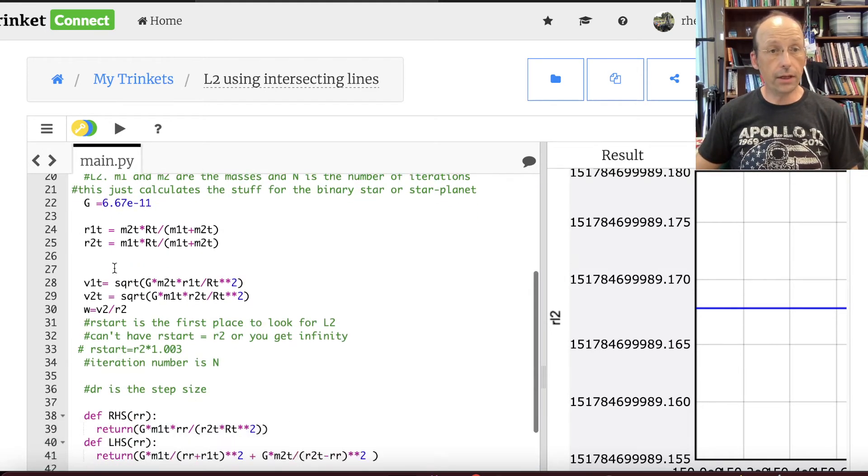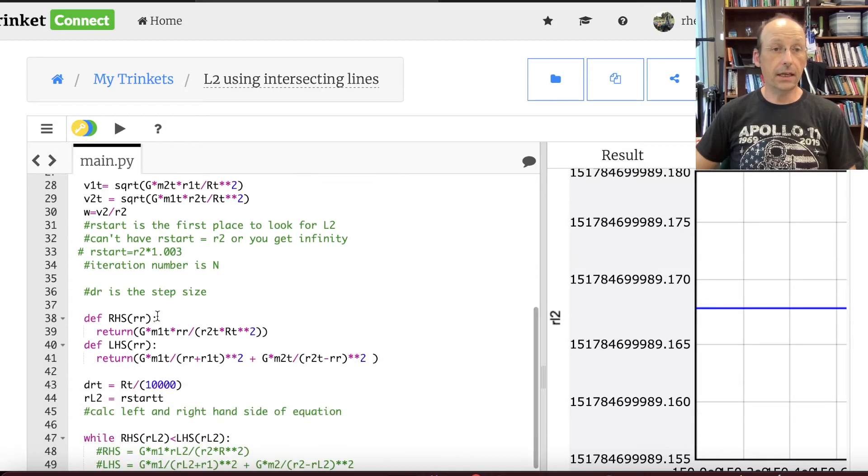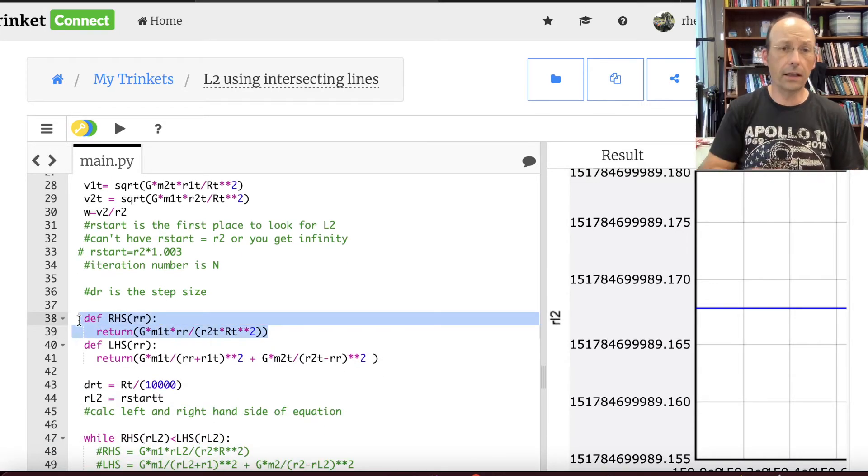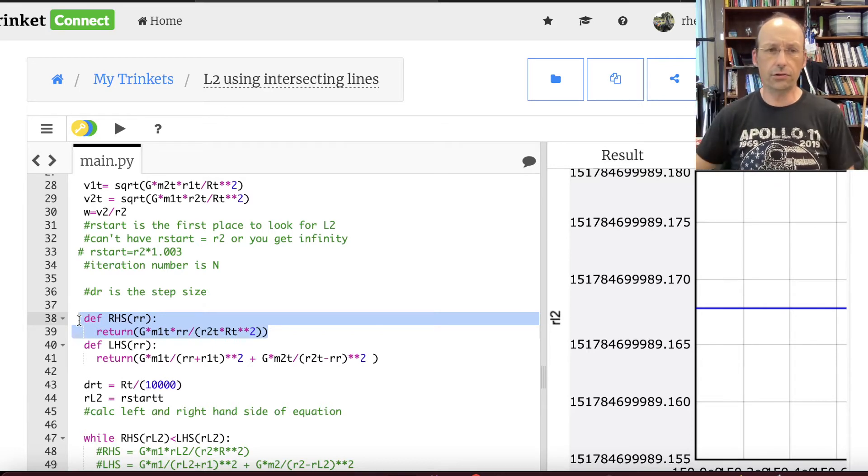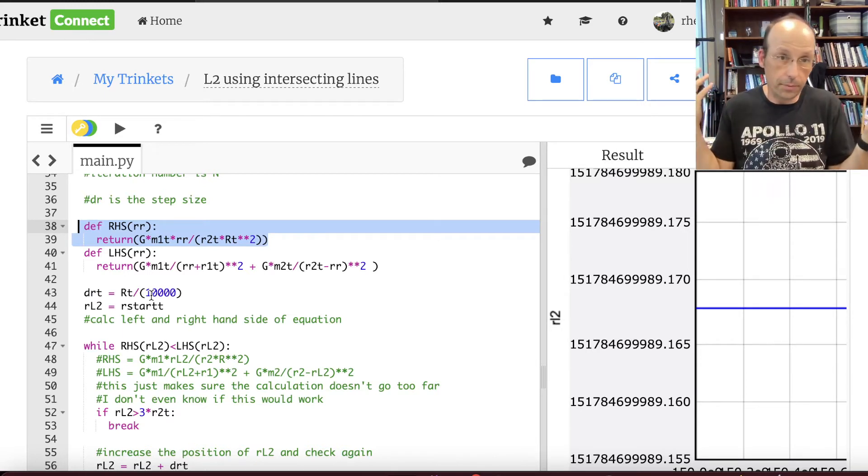So what I do is I calculate r1, r2. I calculate the velocity. So I get them in a binary stable orbit. I calculate the angular velocity. And then this is just to make a new function to calculate the left hand side and the right hand side. It's just easier to do as a function. And then I pick a step size. I just take that distance divided by 10,000. That should be good enough.